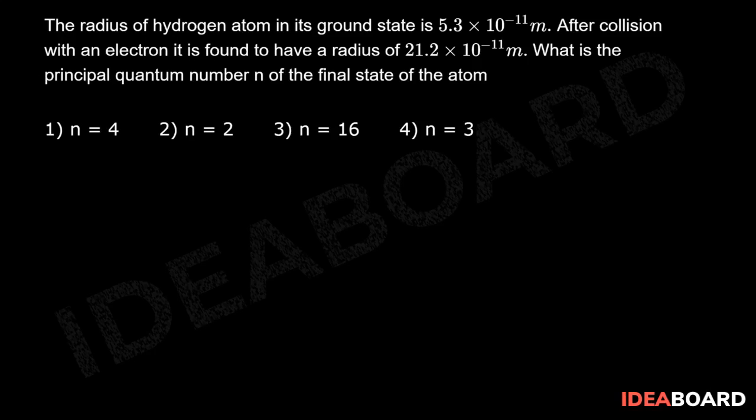The radius of hydrogen atom in its ground state is 5.3 × 10⁻¹¹. After collision with an electron, it is found to have a radius of 21.2 × 10⁻¹¹ meter. What is the principal quantum number n of the final state of the atom?